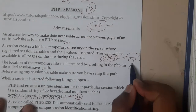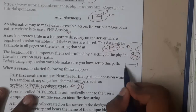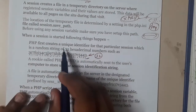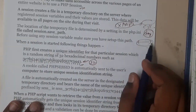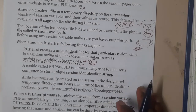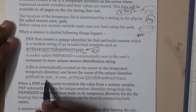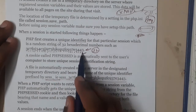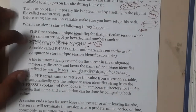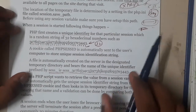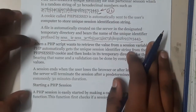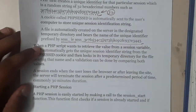Inside that temp folder, a file will be generated. The file name will contain the unique key or unique identifier. There will be a prefix like 'sess_' for session, followed by the unique session ID. This is the same code, and this will be the file name with the session ID. If you are using a local server or localhost, you can test this as well.